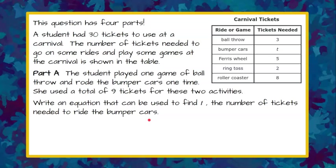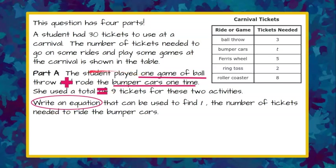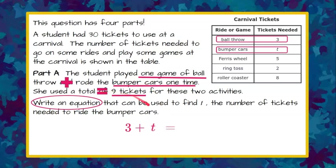Welcome back. Let's do it together. To write our equation, we're looking for T, so our equation is going to have a variable T in it. We need to identify that she played one game of ball and rode the bumper cars one time, and her total equaled nine tickets. So one game of ball plus one time on the bumper cars equals nine. From the table, one game of ball throw was three tickets. So we write three plus T equals nine, because bumper cars is represented by T — we don't know how many tickets the bumper cars cost — and that all equals nine because she spent a total of nine tickets. That's your equation for Part A.